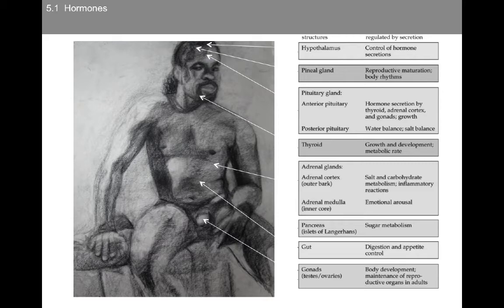We're also going to talk about the thyroid, which plays a key role in growth and development, as well as metabolic rate. This is important for psychologists to be aware of, because oftentimes thyroid dysfunction can mimic certain psychological conditions such as depression and anxiety. We're also going to talk about the adrenal glands — the outer bark, the adrenal cortex, which is important for salt and carbohydrate metabolism as well as inflammatory reactions. And the inner adrenal medulla is important for emotional arousal. We'll be talking about this topic throughout my lectures.